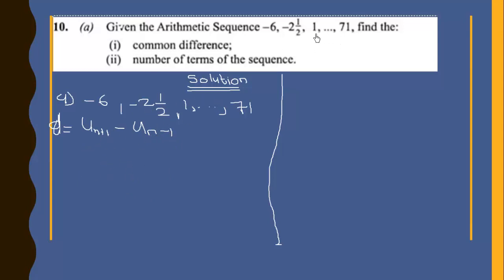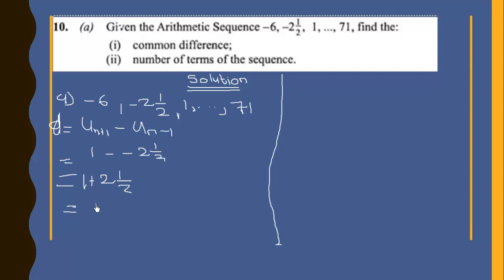Let's say the subsequent term is one and the previous term is negative two and a half, so this will be equal to one plus two and a half, which gives us three and a half, or seven over two.